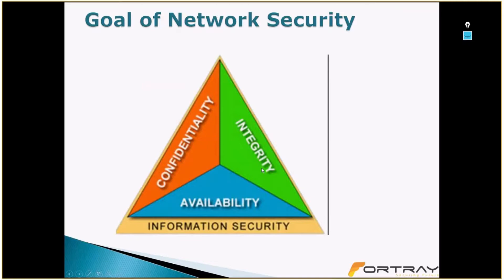Now, what are the goals of network security — how do we say a network is nearly secure? The answer is CIA — not the intelligence agency, but Confidentiality, Integrity, and Availability. If you achieve these three things, your network has good security. Be careful though: putting too much security may make resources unavailable.